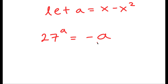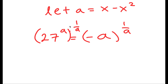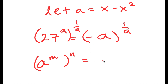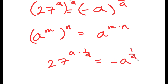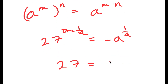From here, I'm going to take the power of 1 over a on both sides. Again, using the property a to the power of m to the power of n equals a to the power of m times n, this turns to 27 to the power of a times (1 over a) is equal to negative a to the power of (1 over a). And a times 1 over a cancel out, so I get 27 is equal to negative a to the power of (1 over a).